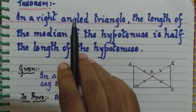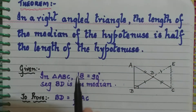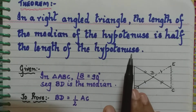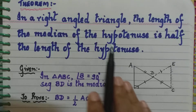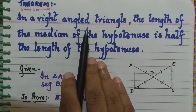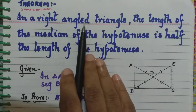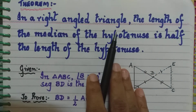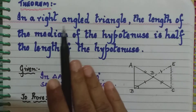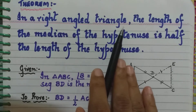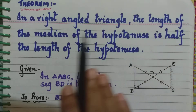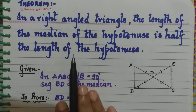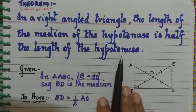Now we go to one more theorem. This theorem is a little longer, but once you understand the steps it is very simple. This theorem is based on the next exercise, practice set 3.3. The statement says: in a right angled triangle, the length of the median of the hypotenuse is half the length of the hypotenuse.